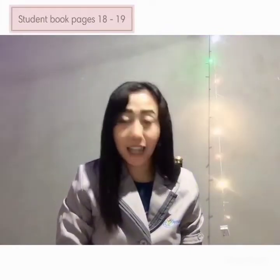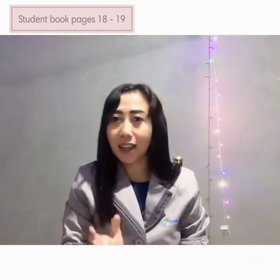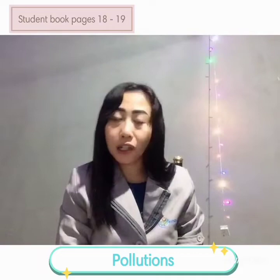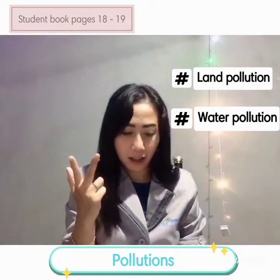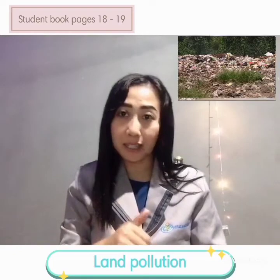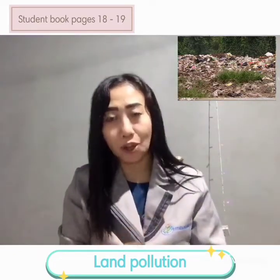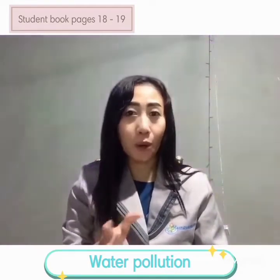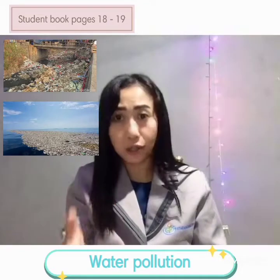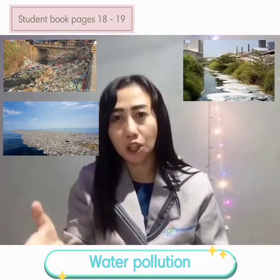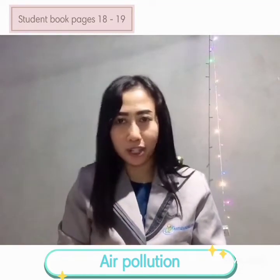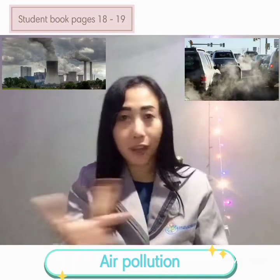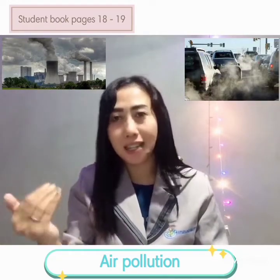Let's continue on page 18-19. In page 18-19, we talk about pollutions. There are three pollutions: land pollution, water pollution, and air pollution. Land pollution occurs when rubbish is not disposed properly, making the area very dirty. Water pollution happens when the river or sea becomes dirty because of rubbish and chemical waste from factories. Air pollution is caused by factories and vehicles that produce smoke, making the air dirty.